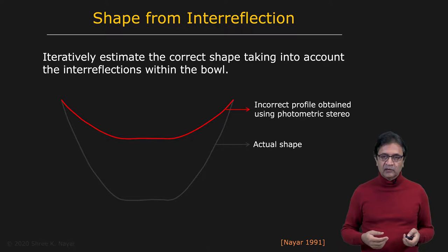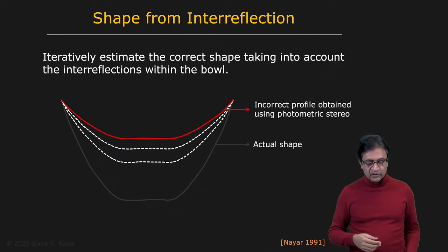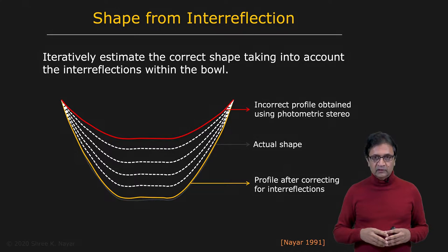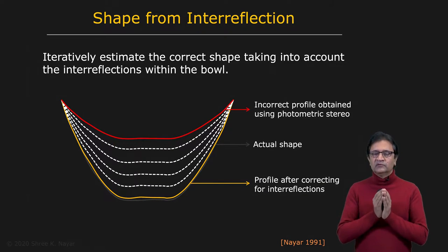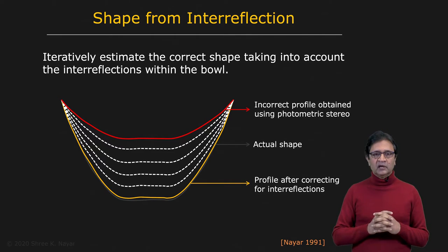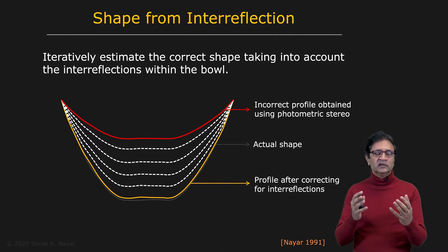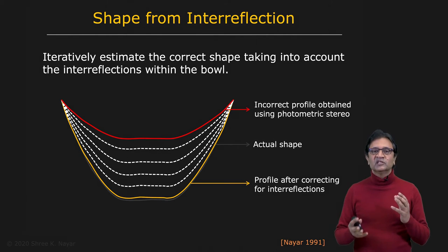You iteratively estimate a refined shape by taking into account interreflections in each iteration. When you do that, you end up with a shape that converges to something very close to the actual shape. This is a simple case of a Lambertian surface with simple geometry — in such cases we can handle interreflections, account for them, compensate for them, and recover a shape very close to the actual shape. But in general, interreflections pose a very hard problem. You're trying to recover a three-dimensional scene, and every such scene has interreflections. But in order to know what those interreflections are, you need to know everything about the scene — so this is a bit of a chicken-and-egg problem.